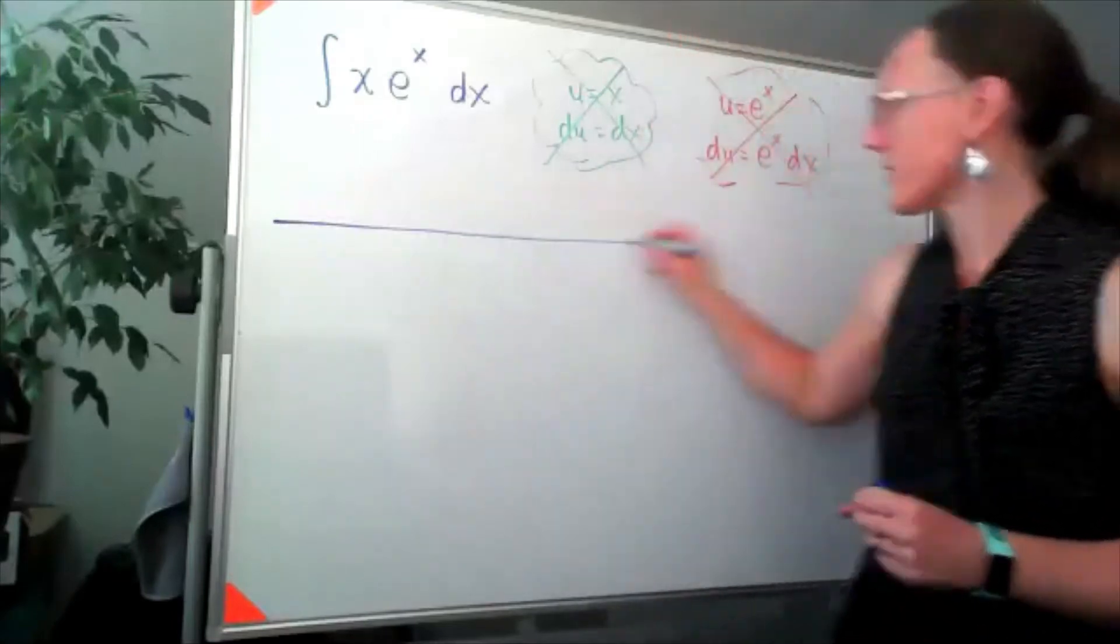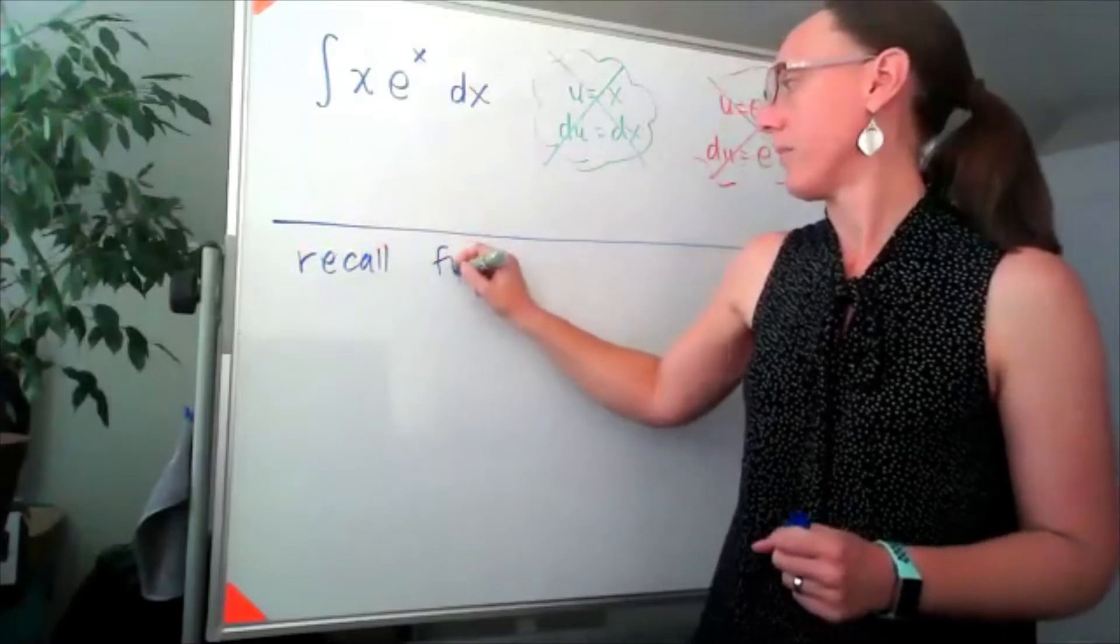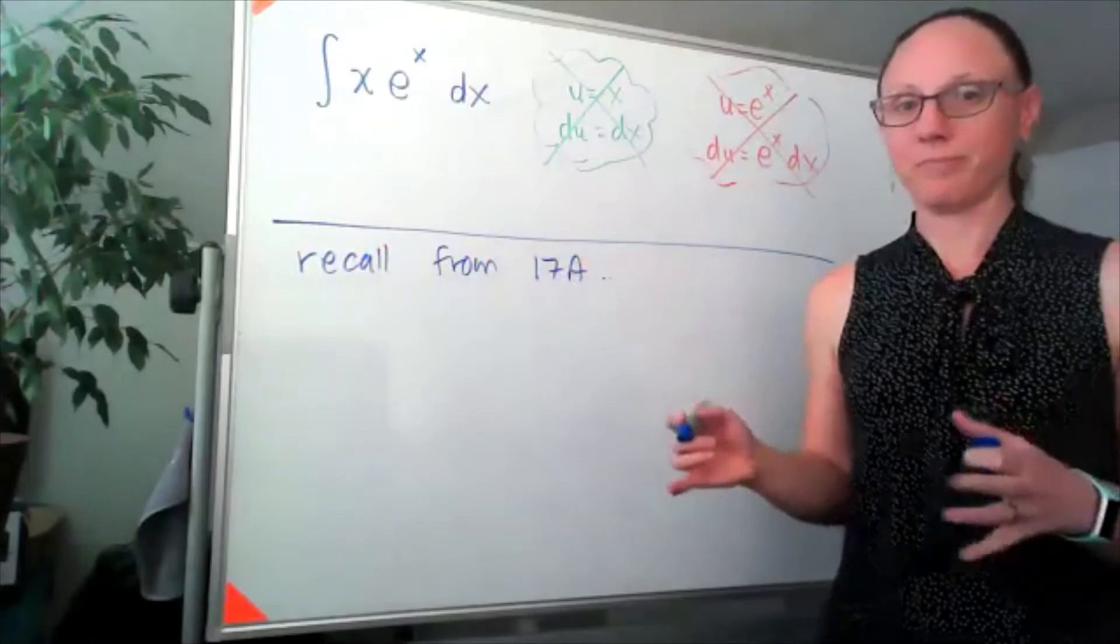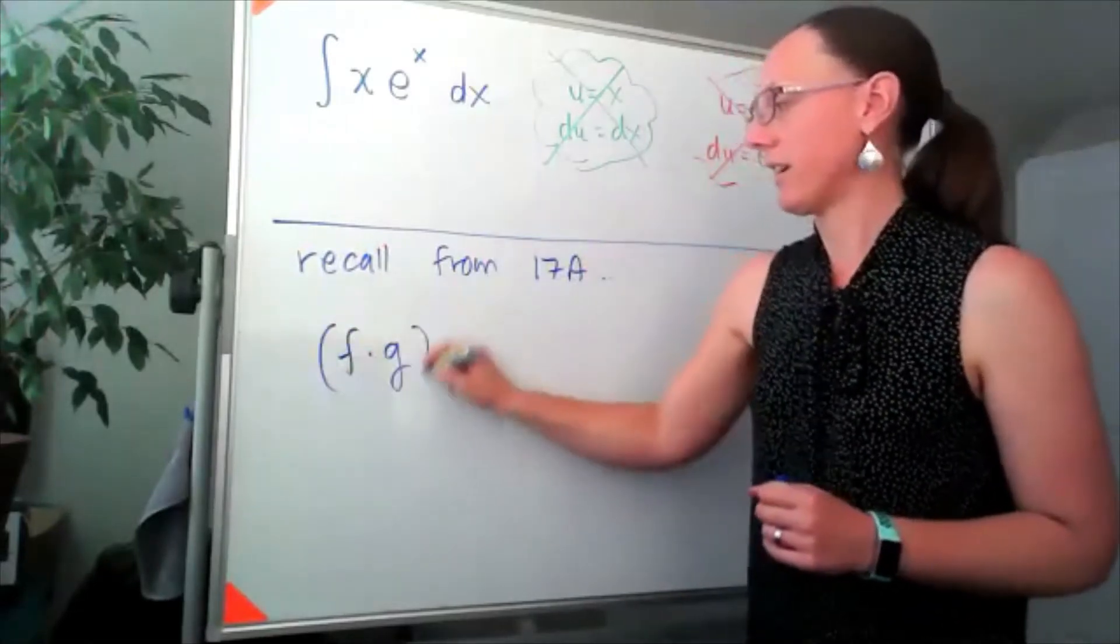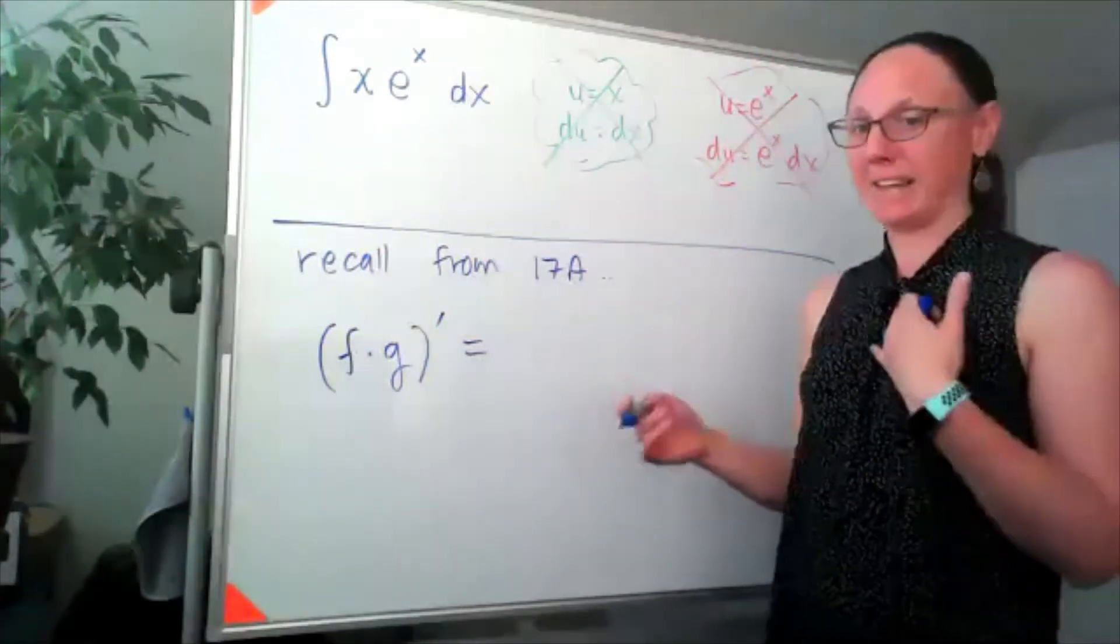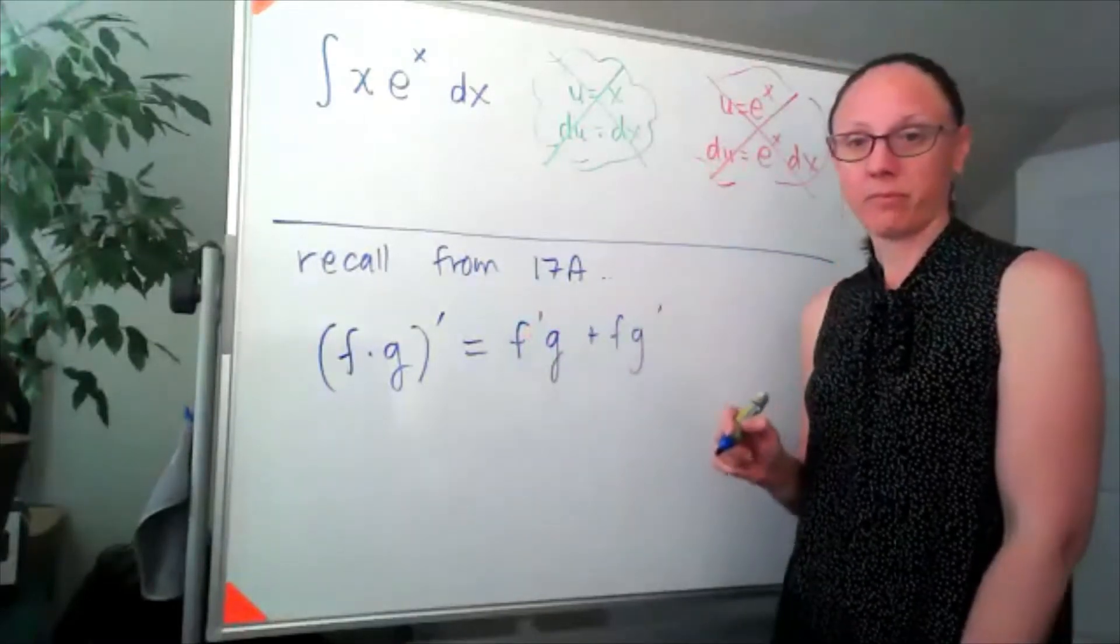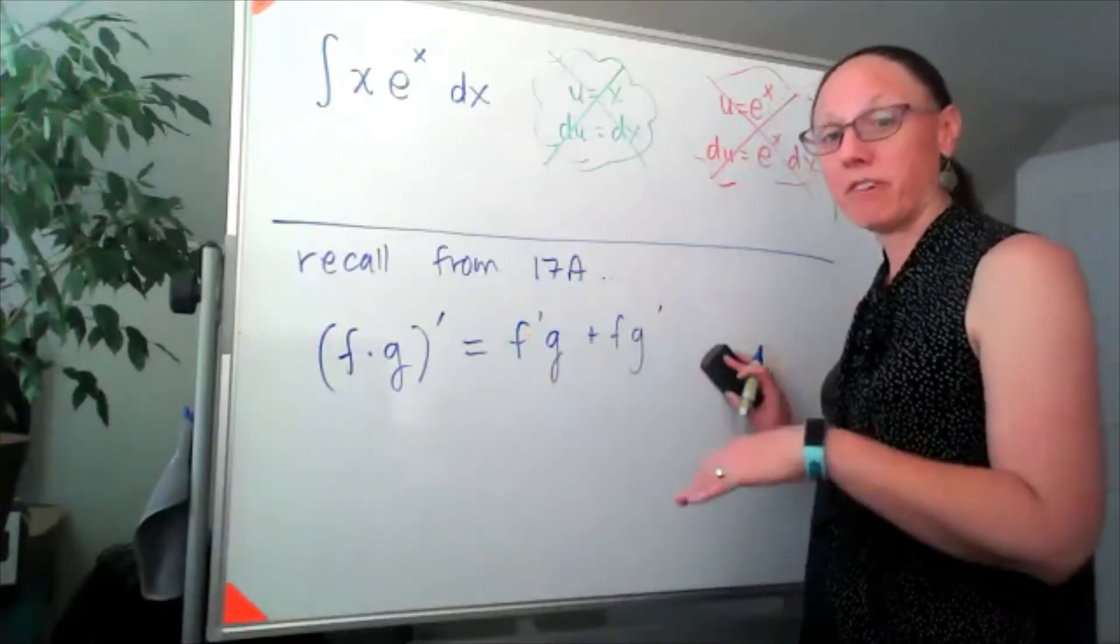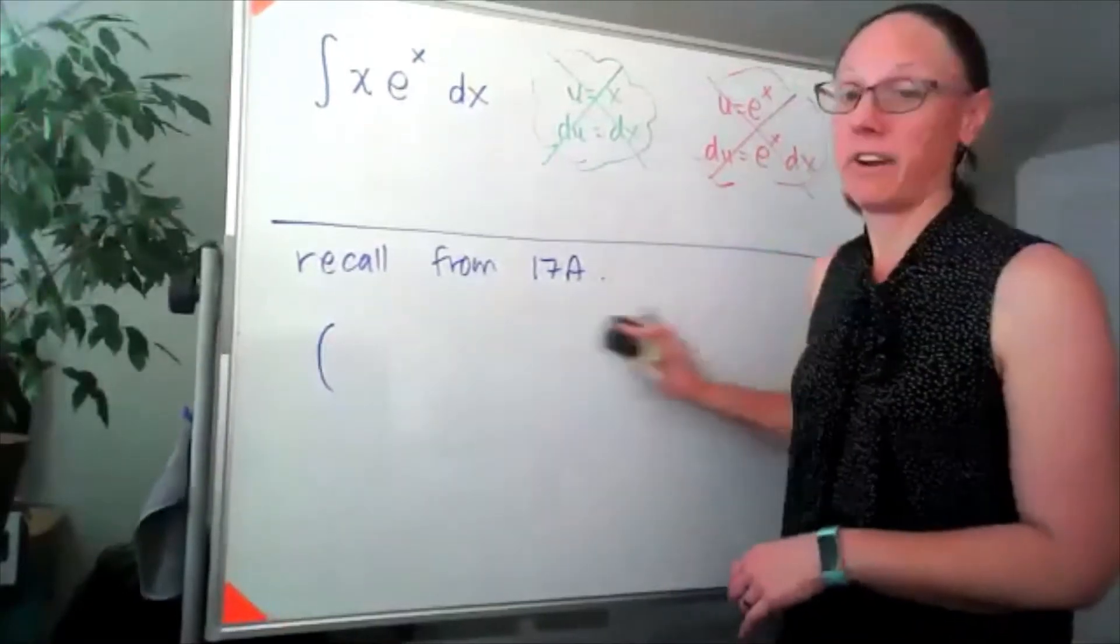Now, we're going to zoom back to 17A for a second. Product rule: if I had an f times a g and I took the derivative, there are a bunch of different ways you can organize this, but I usually write this as f'g + fg'. I'm going to switch the letters up on us. Instead of f and g, I'm going to use u and v because those are the more typical letters we use for integration by parts.